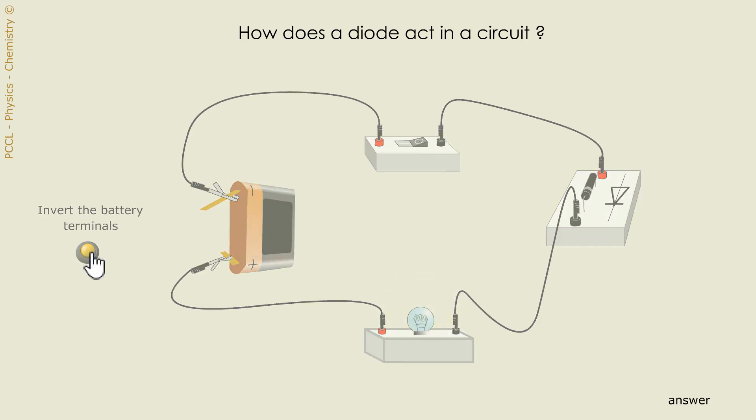If you reverse the battery terminals without touching the switch, the lamp goes out. The current would have like to pass like that, from the plus to the minus sign. Except that the arrow of the symbol opposes it.